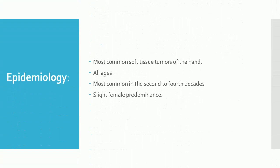Epidemiology: Ganglion cysts are the most common soft tissue tumors of the hand. They can occur at all ages, but are most common in the second to fourth decades with a slight female predominance.